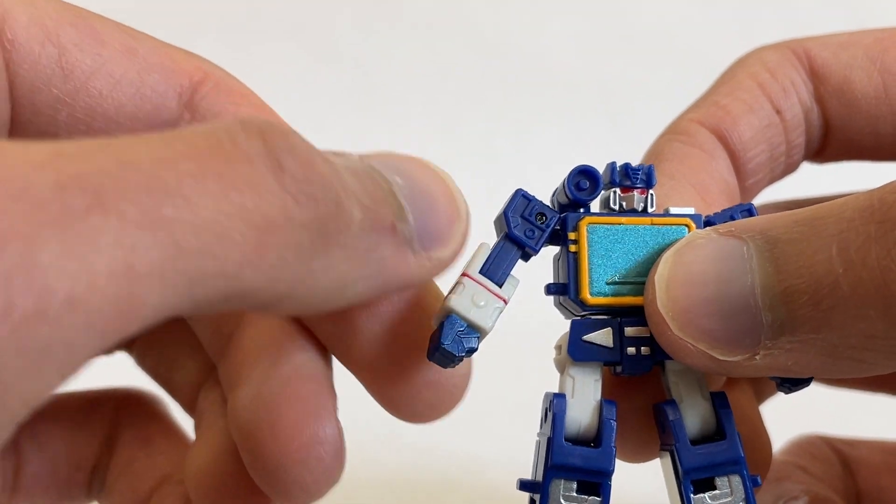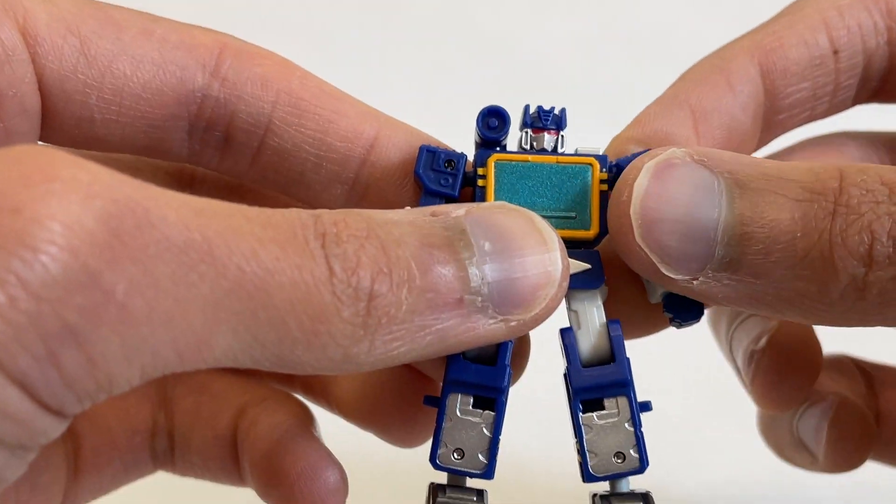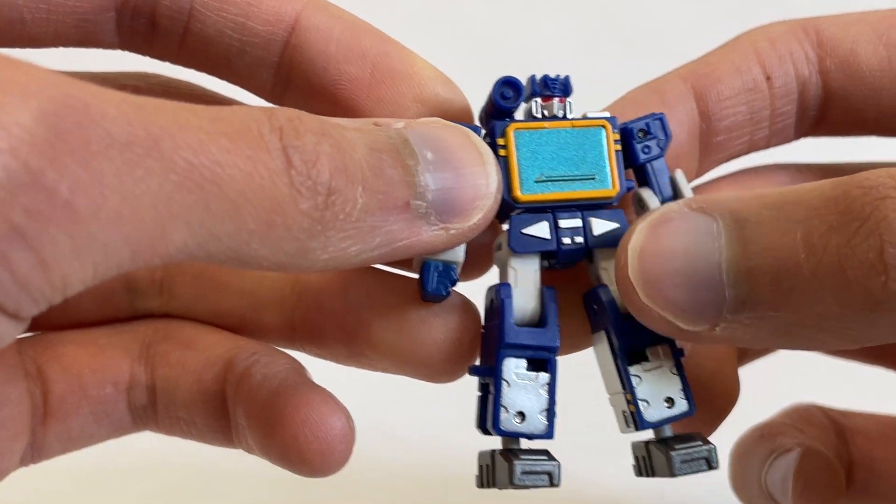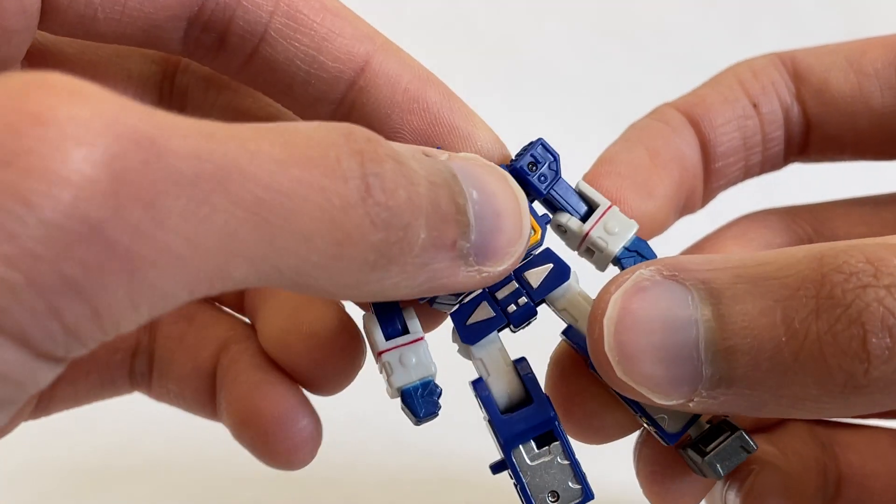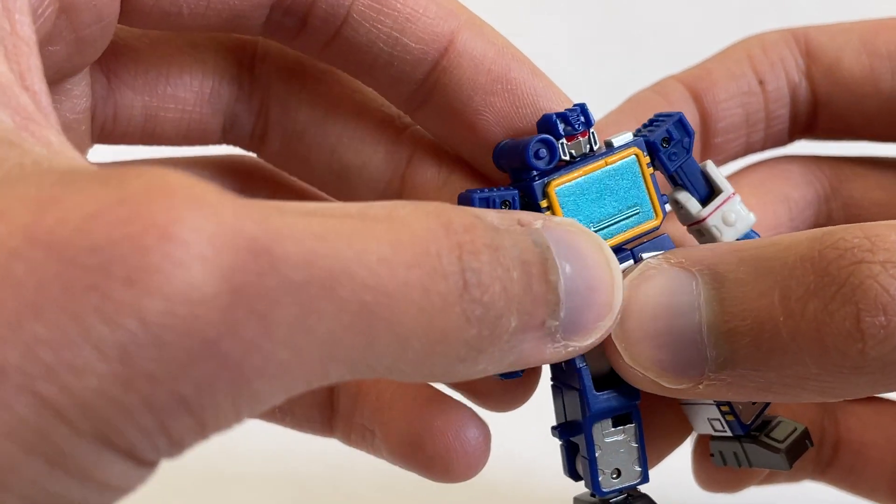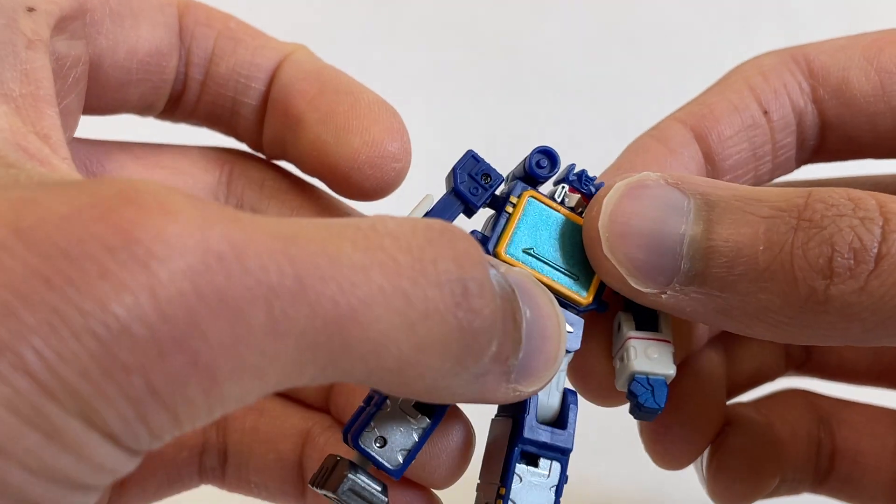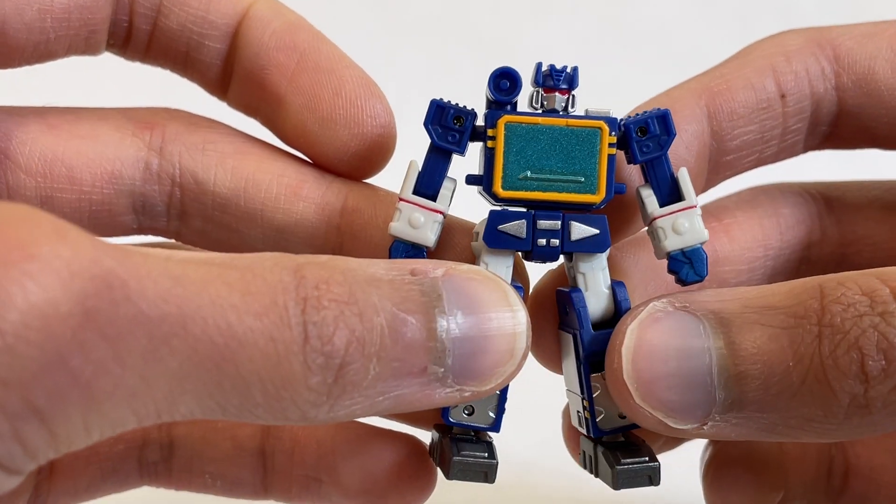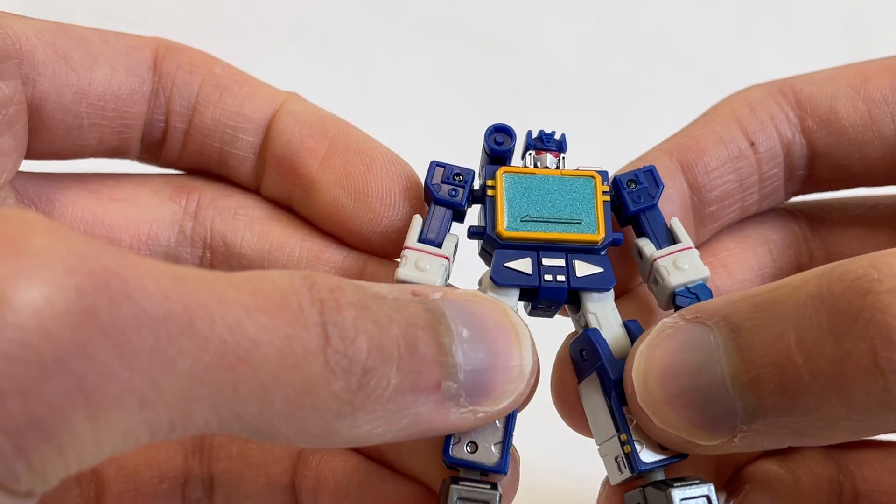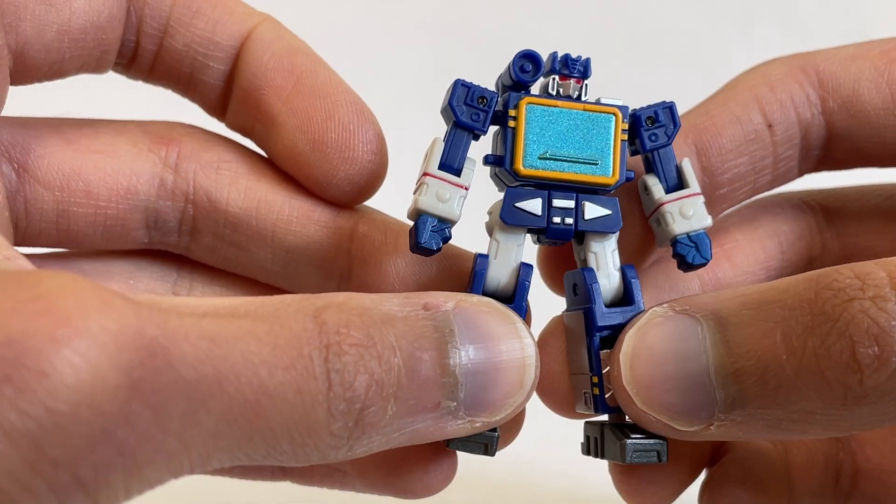For sure, check out some of my other reviews on the channel. And then going down the line, he actually does have a waist rotation like Dr. Wu's Blaster, who I also reviewed. Which is a really nice feature for such a tiny figure. Having that waist rotation is fantastic, and something that Hasbro's Core Class figure actually does not incorporate. So this guy's already more articulated.